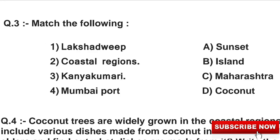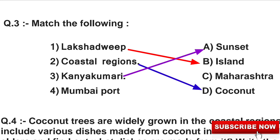Question 3: Match the following. The answer for the first match is Gujarat. B: Coconut — coastal regions mein coconut bahut zyada milte hain. Third: Kanyakumari — we match this with A, Sunset. Fourth: Mumbai Port — we match this with C, Maharashtra. Mumbai Port Maharashtra mein hai.